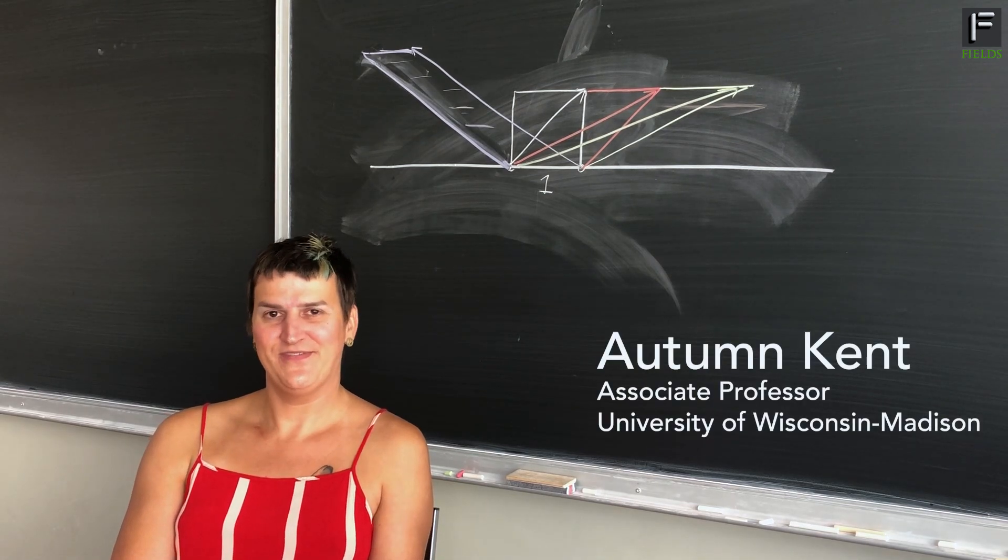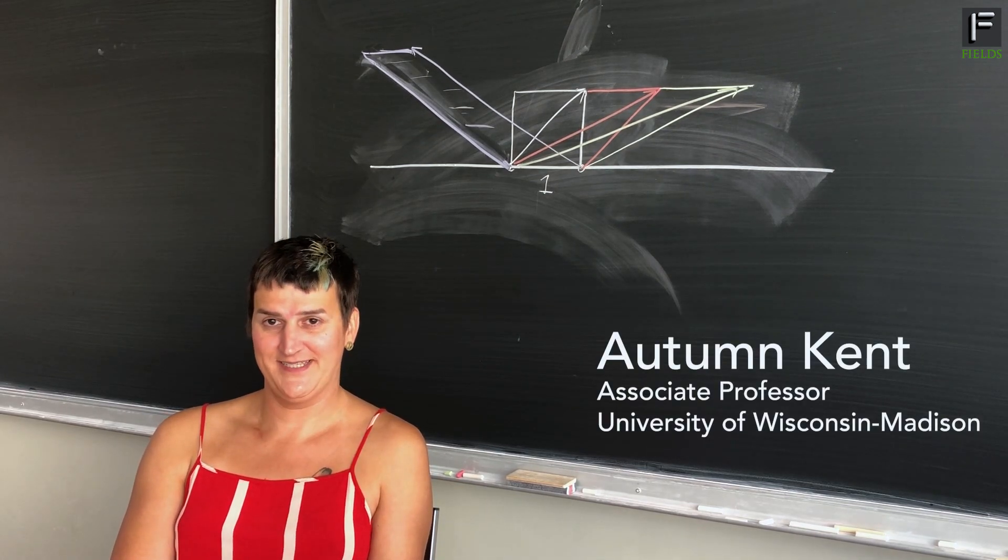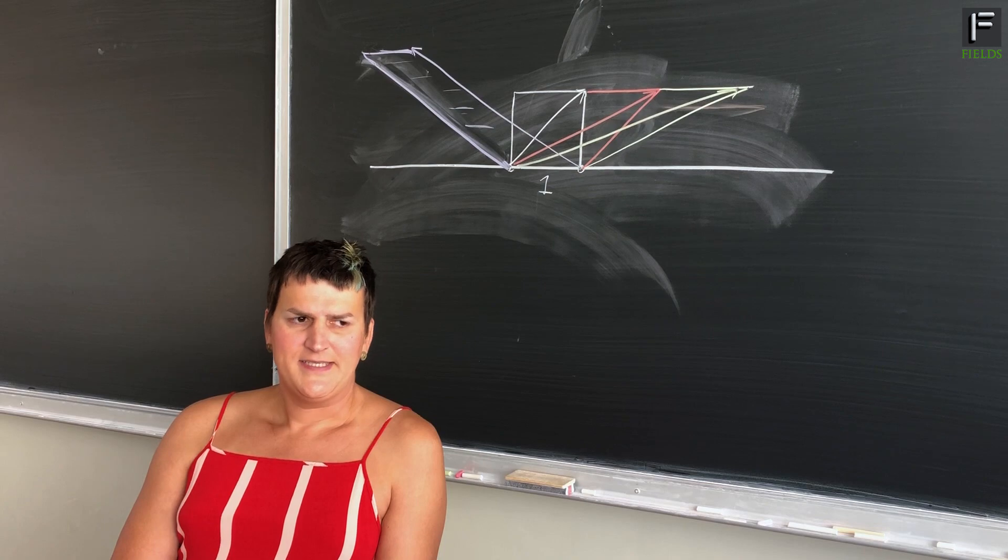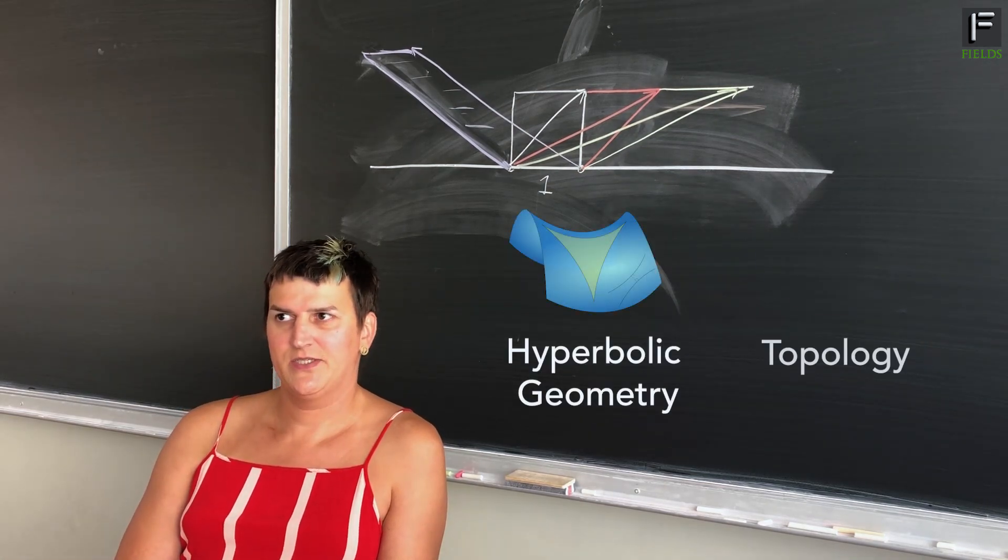I'm Autumn Kent. I'm an associate professor at the University of Wisconsin at Madison. I study hyperbolic geometry and topology.